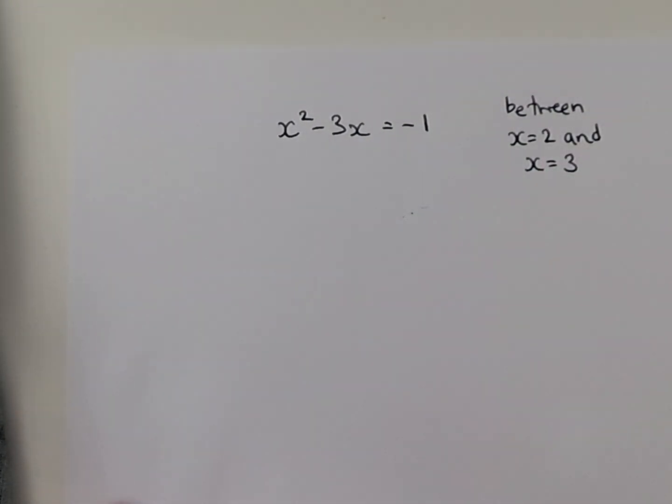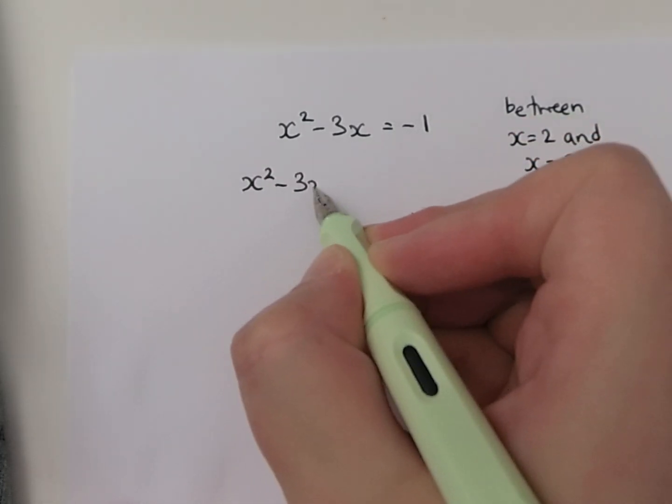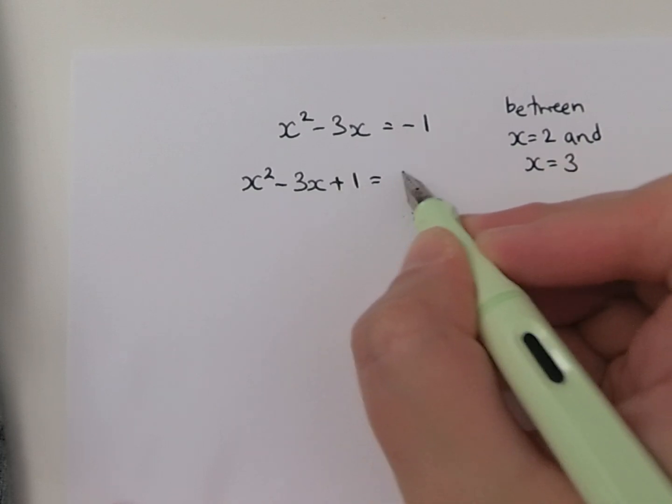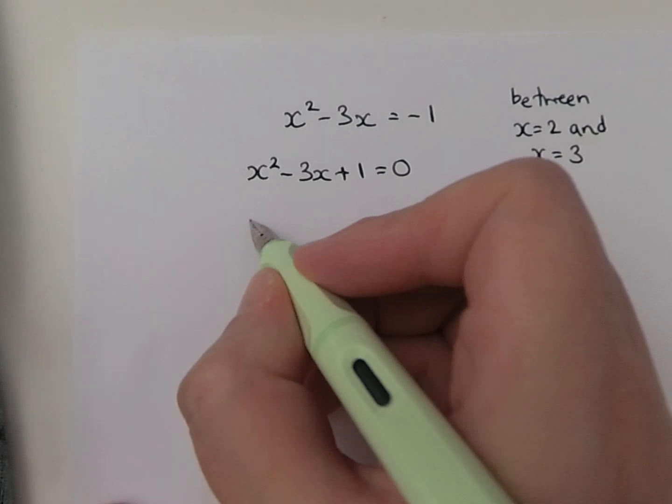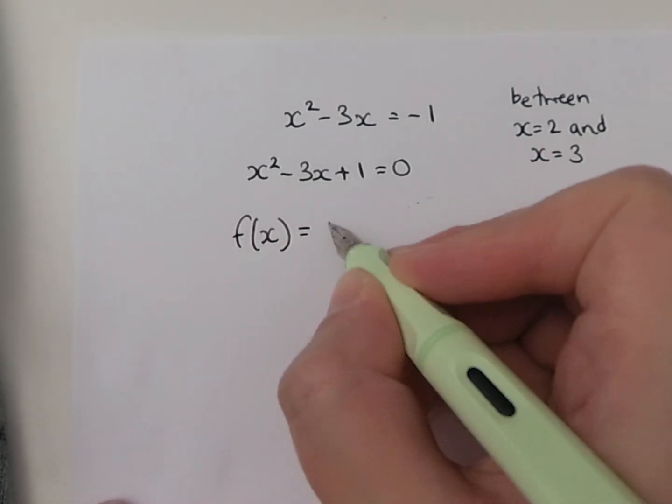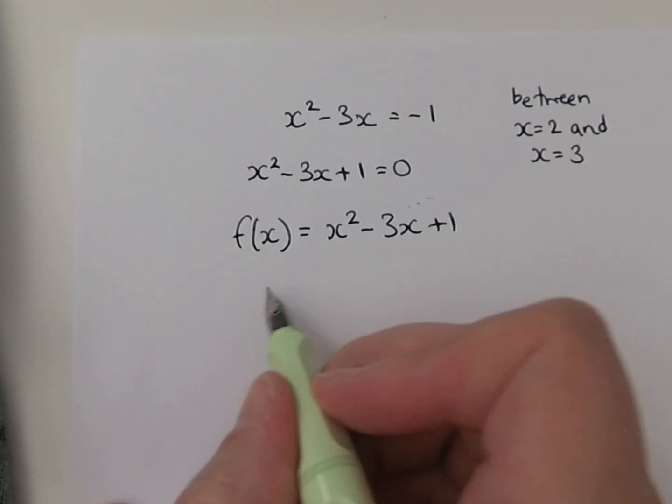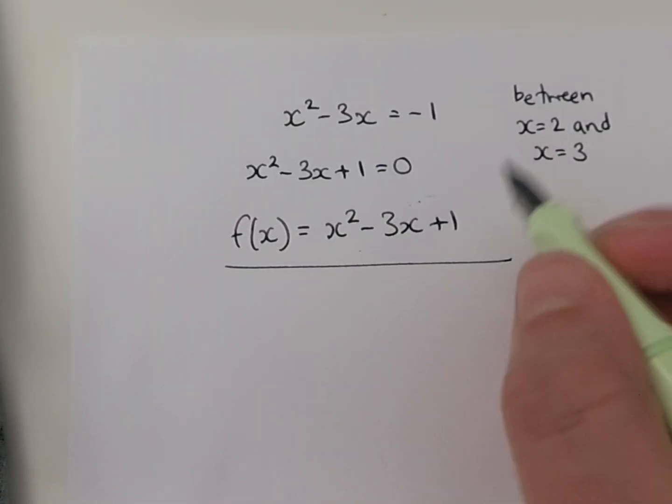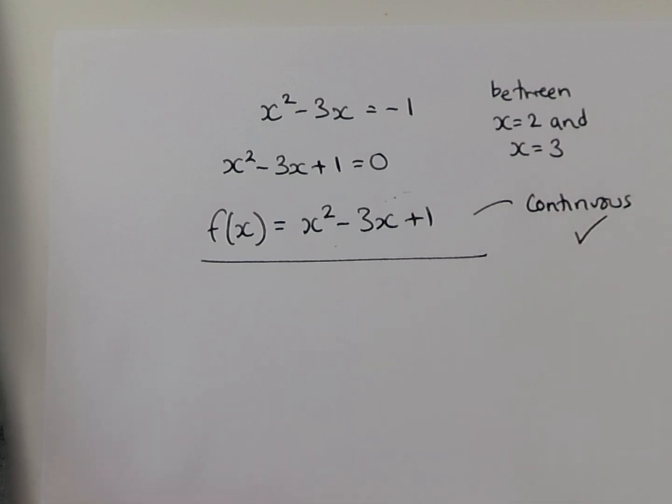I'm going to use the change of sign rule to show this. The first thing I need to do is write this in function form, so I want to set it equal to zero. We've got x squared minus 3x, well if I add 1 to both sides we'll get it equal to zero. So I'm going to rewrite my equation as f(x) equals x squared minus 3x plus 1. Now let's look at the form of the equation. It's a quadratic, so we're looking at a parabola, so we know that this is continuous.